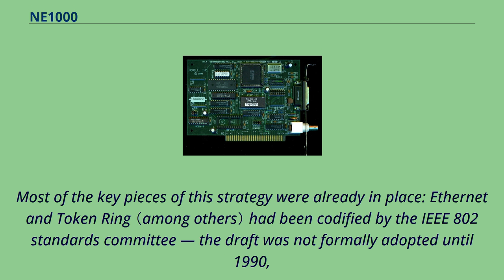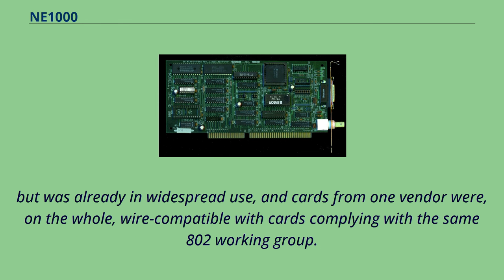Most of the key pieces of this strategy were already in place. Ethernet and Token Ring had been codified by the IEEE 802 Standards Committee — the draft was not formally adopted until 1990, but was already in widespread use — and cards from one vendor were, on the whole, wire compatible with cards complying with the same 802 working group.